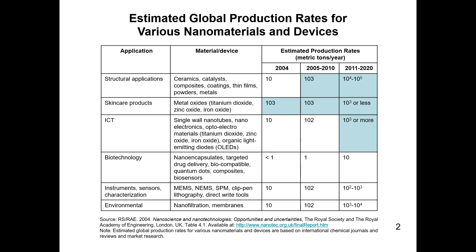This particular table was published in 2004. The source is 'Nanoscience and Nanotechnologies: Opportunities and Uncertainties,' published by the Royal Society and the Royal Academy of Engineering, London, UK. According to this data, these structural materials were estimated at 10 metric tons per year in 2004, and were predicted to reach 10³ metric tons per year from 2005 to 2010.